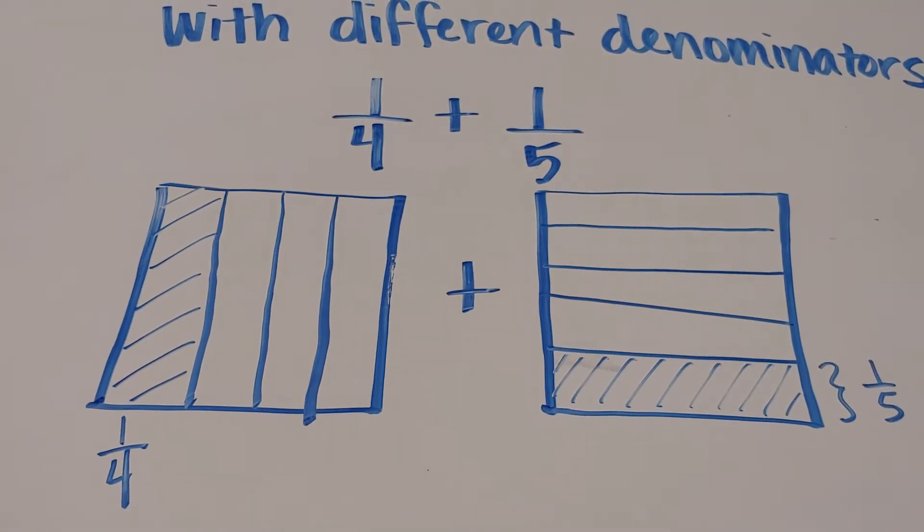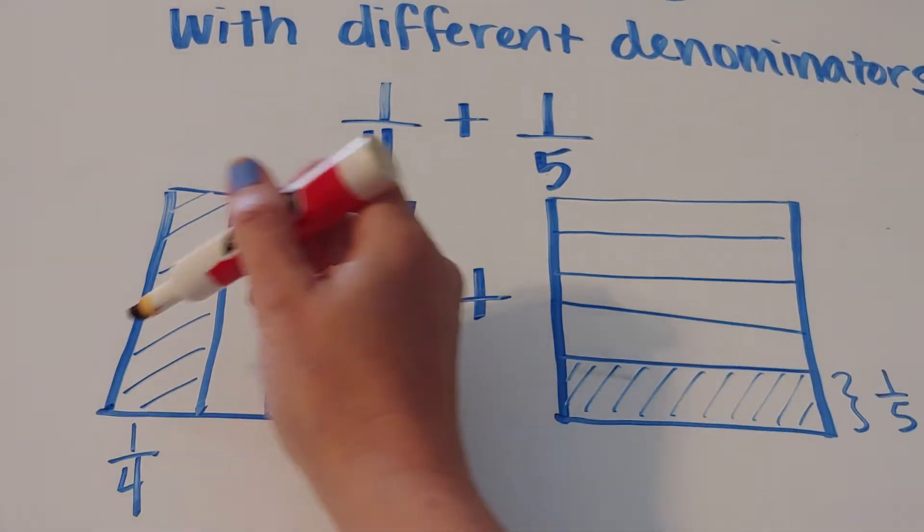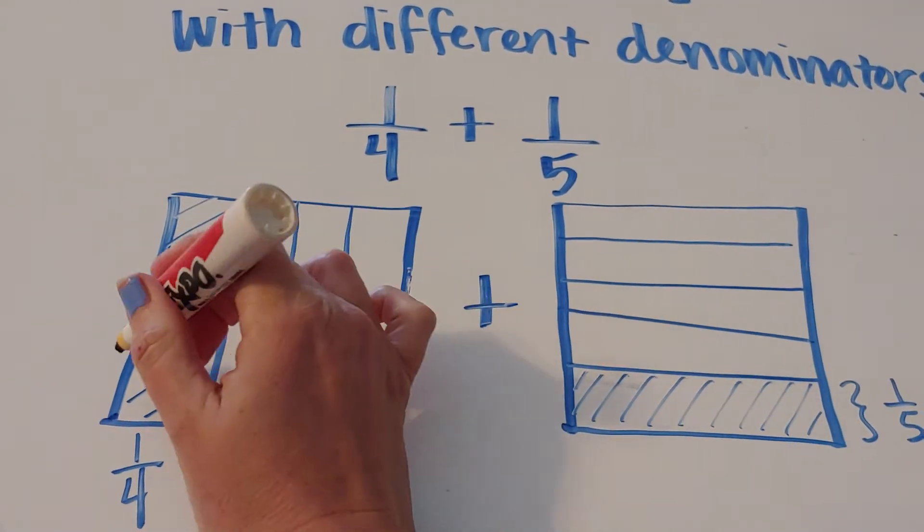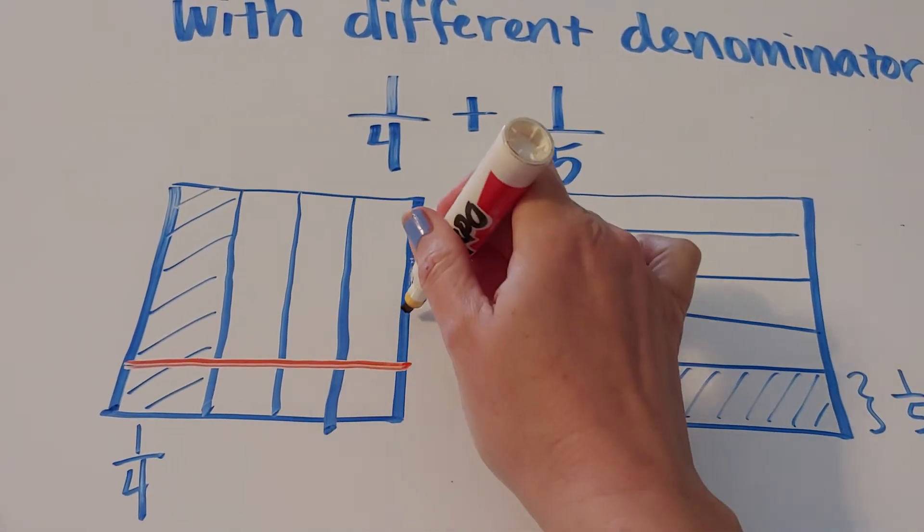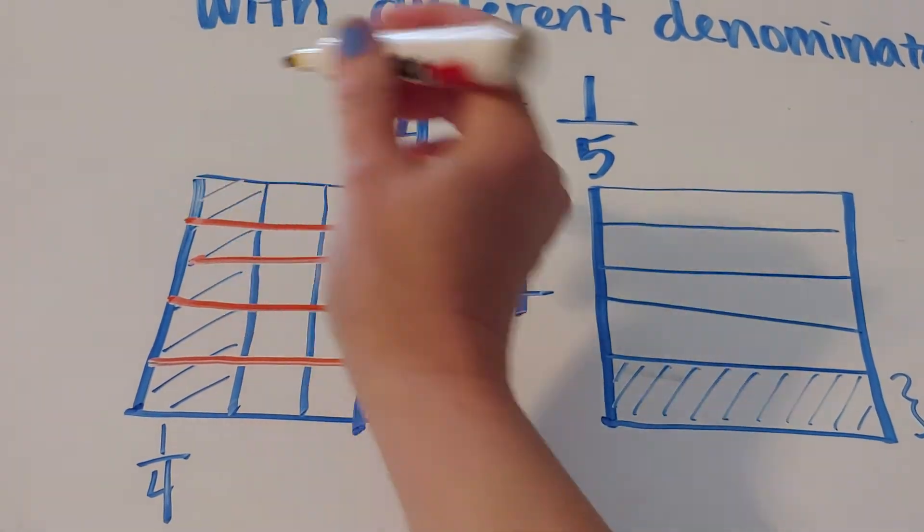You take your pen and you are going to slice this one that was sliced with four vertical lines. You're going to slice it with five horizontal lines. So one, two, three, four, five.